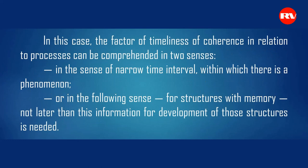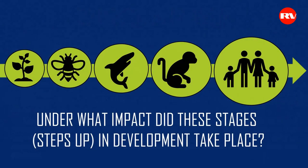The factor of timeliness of coherence in relation to processes can be comprehended in two senses: in the sense of a narrow time interval within which there is a phenomenon; or for structures with memory, not later than this information for development of those structures is needed. Recall the global evolution process — the emergence of plants, then primitive animals, after that more complex life forms, and so on. A question arises: under what impact did these stages, these steps-up in development, take place? Moreover, all these took place in a timely fashion, at the right time. Is this an accident?